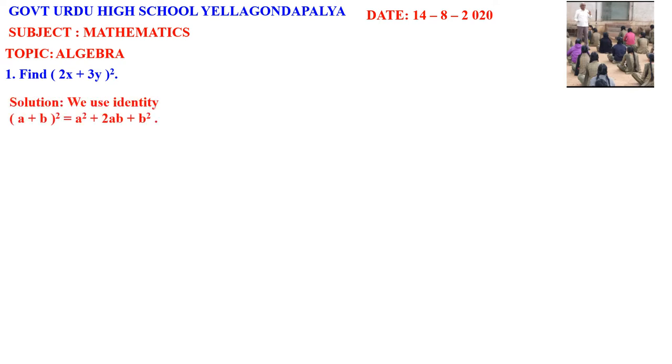For this we should use the identity: a plus b whole square is equal to a square plus 2ab plus b square.